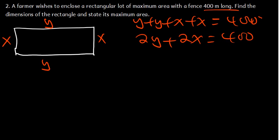We can simplify by dividing everywhere by 2, giving us Y + X = 200. Let's call that equation 1.